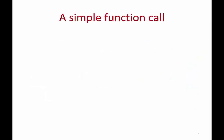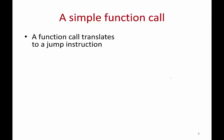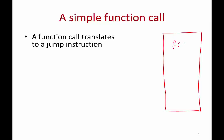Before we understand how a system call works, I'd like to first explain how a simple function call works, then we are going to move from that to a system call. A function call basically translates to simply a jump in the program flow from one instruction to not the next one, but to another instruction somewhere else. Here is your memory image and in your code, you have a call to some function and the code for the function is defined somewhere else.